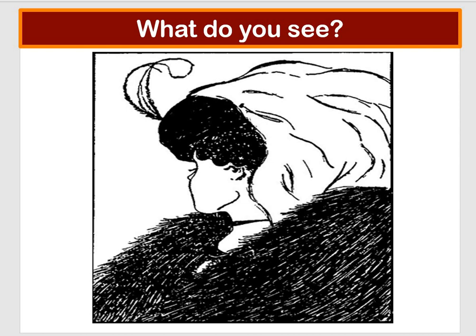If you're seeing the old lady, her face is sideways on rather than turned away. Here's her chin, her mouth, her nose, an eye, her other eye with eyelashes, and this is like a headscarf she's wearing. Maybe you can see both now, or maybe you can still only see one — get somebody else to point it out to you because it can be really, really hard to see both.